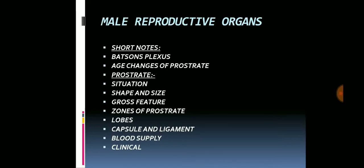Moving on to male reproductive organs. From this chapter, short notes come on Batson's plexus and age changes of the prostate. A separate question can come on the prostate, covering situation, shape and size, gross features, zones of the prostate, lobes, capsule and ligament, blood supply, and clinical aspects. A separate question can also specifically come on the zones of the prostate, lobes, and capsule and ligament of the prostate.